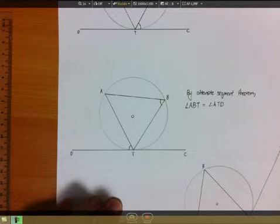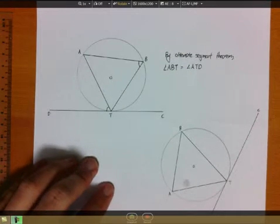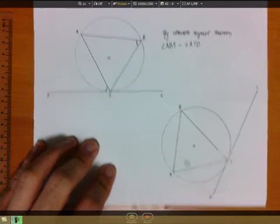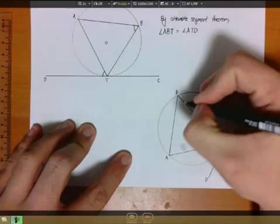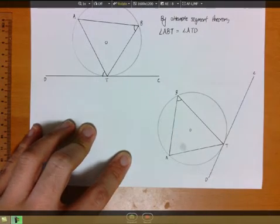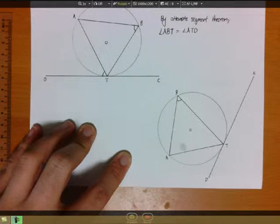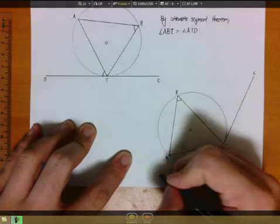Now I shall give you an example where the tangent is in another orientation. So let me choose this angle now, angle ABT. Using the alternate segment theorem, can you identify which other angle is equals to angle ABT?